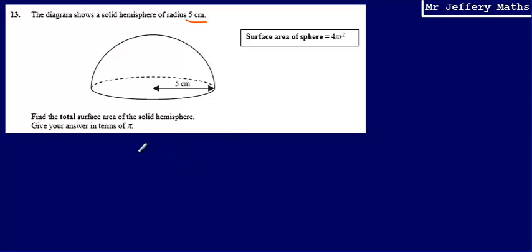So the surface area of the entire sphere would be 4 × π × 5², which is 5 squared. If we simplify this, 4 times 5 squared, so 4 times 25 would be 100, multiplied by π, giving us 100π.